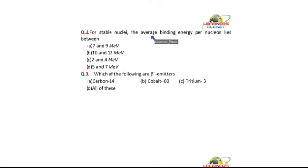For stable nuclei, the average binding energy per nucleon lies between 7 and 8 mega electron volts. Most of the nuclides are in that range. Iron, which is the most stable, has an average binding energy per nucleon of 8.79 MeV.